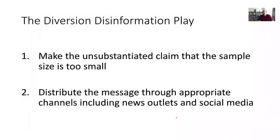The diversion disinformation claim would be very simple: just make an unsubstantiated claim that the sample size is too small. Many people will say, 'Oh my goodness, yes, the sample size is too small,' and that would cause people to change their minds about whether to trust the election result. Once you make that claim, you distribute that information across the network — through your favorite news outlet, social media, or whatever method the small group of people who spread COVID vaccine disinformation used. It's not terribly difficult to do, and I think it's actually quite problematic.